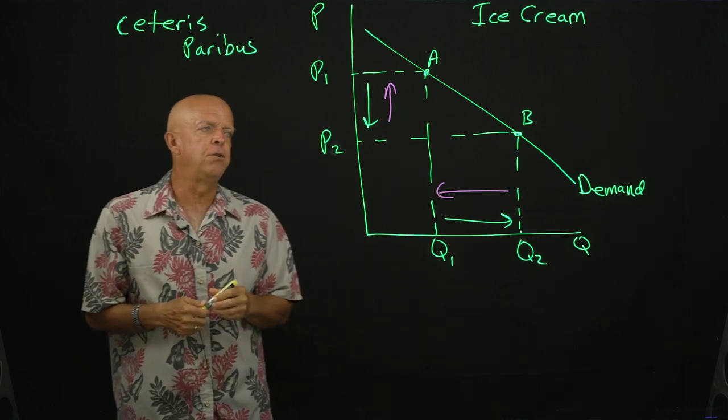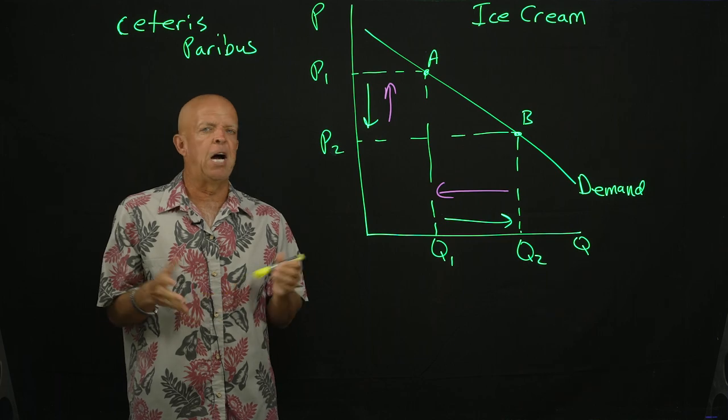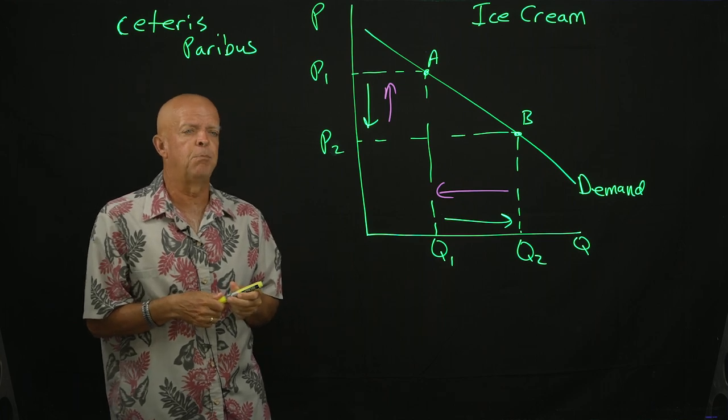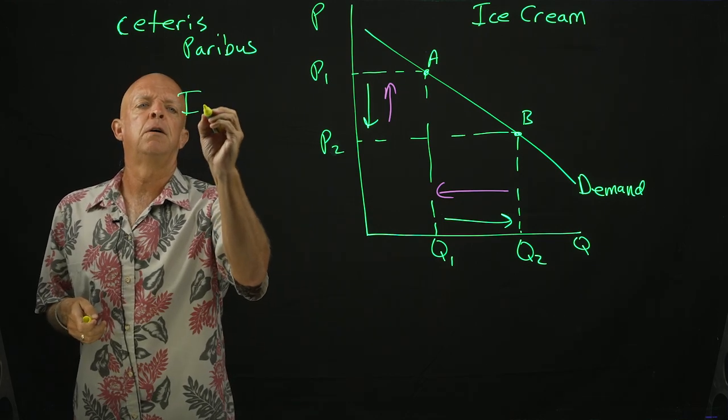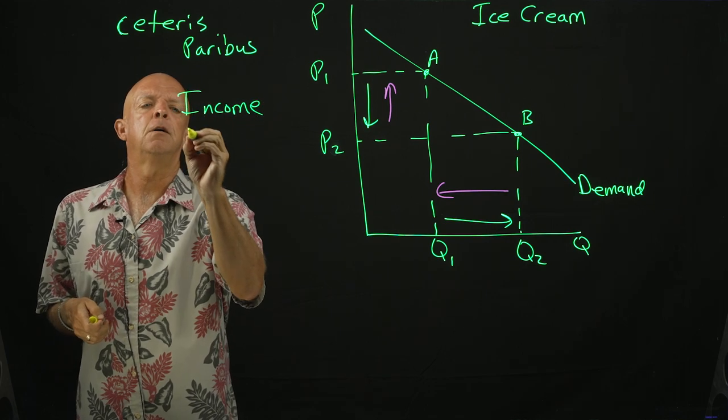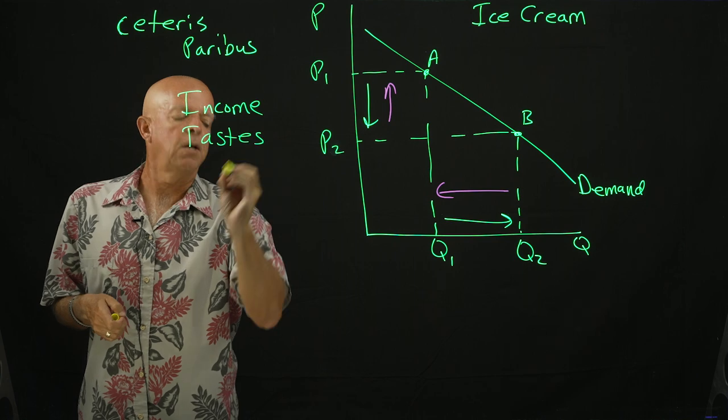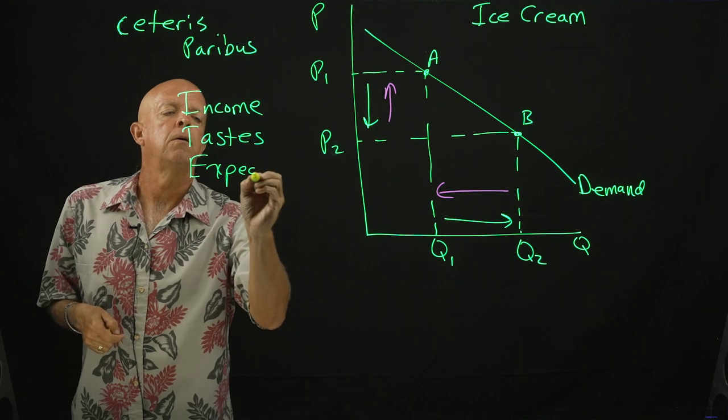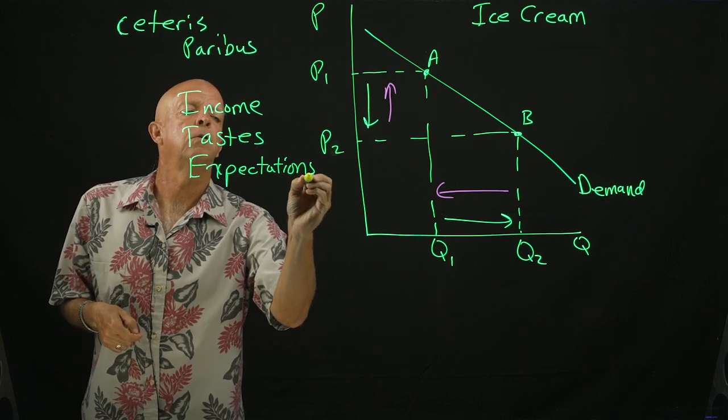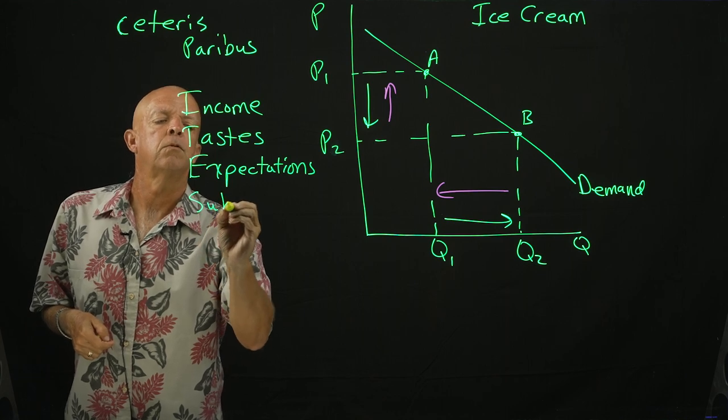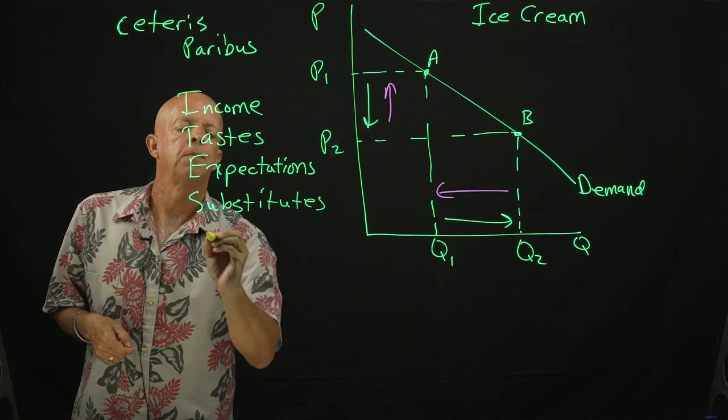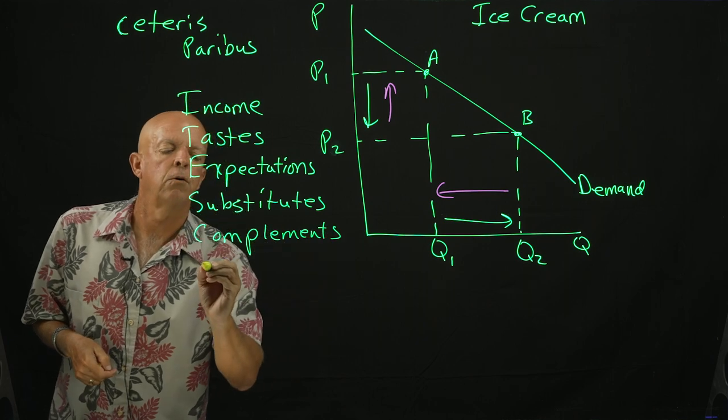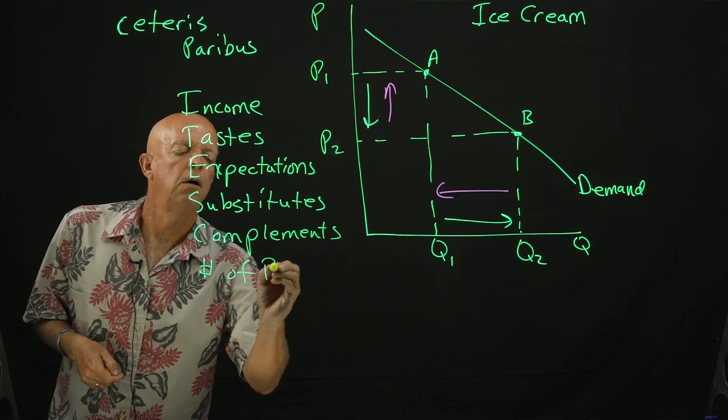Now, other things can and do impact the demand for a particular item. Let's call it ice cream. There are a number of factors that you see in your book. These factors can be such things as income, tastes, expectations, substitutes, and complements, and, of course, number of buyers.